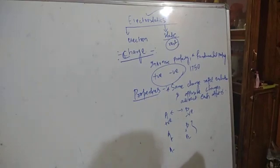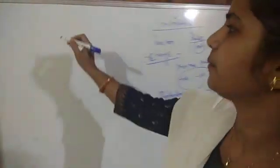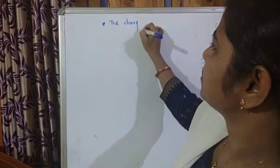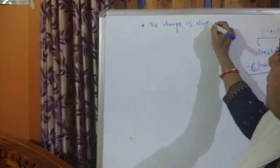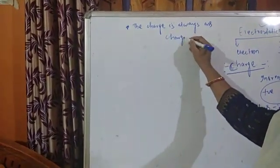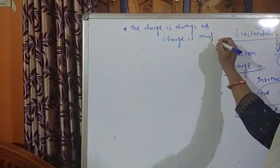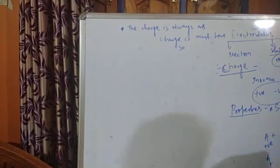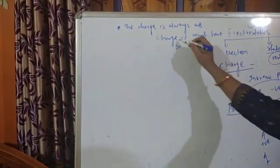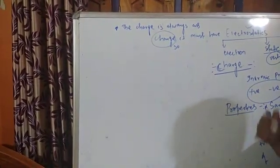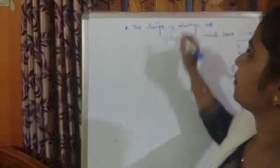The charge is always associated with mass. That means a particle which has charge must have some mass. Charge means the electrons, and since electrons have some mass, when a body is charged it has some mass. But it does not mean that every body possessing some mass will always be charged. This is one important property.